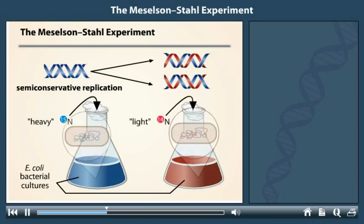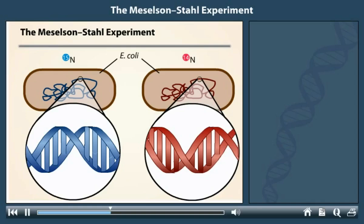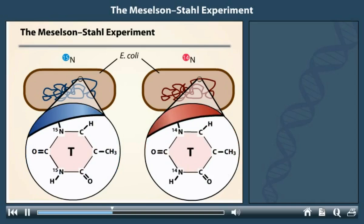After many generations, the DNA in the bacteria contained either the heavy or the light form of nitrogen, but not both. In this example, the nitrogen atoms in the thymine base are labeled with either the heavy or the light forms of nitrogen.